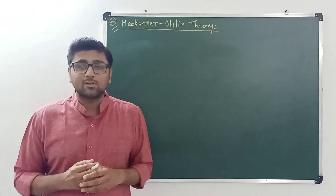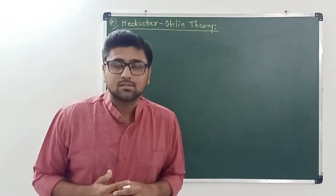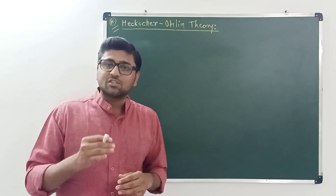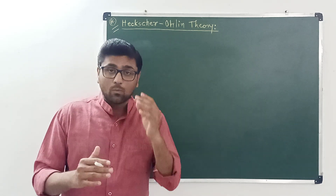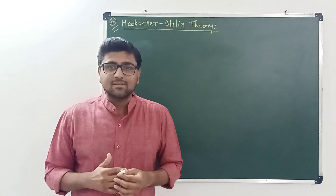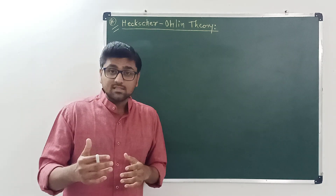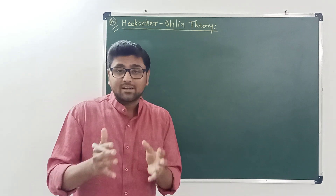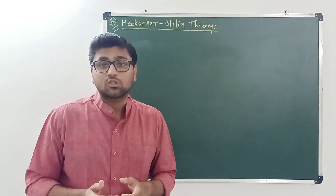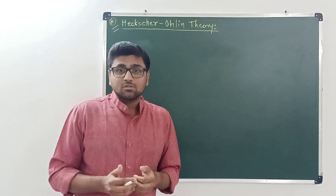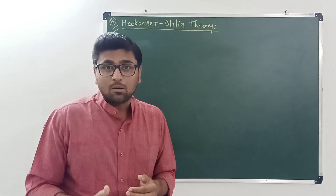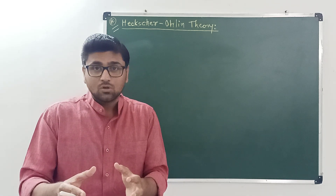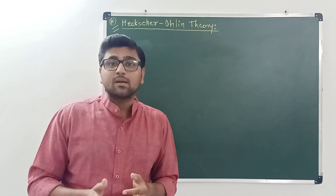I want to discuss the Heckscher-Ohlin theory of international trade in this video. Before we understand this theory, we first need to understand the idea of comparative cost advantage. The comparative cost advantage theory was developed by David Ricardo. It says that one nation has an absolute advantage in production of both commodities, but has a comparative advantage in production of one commodity. Ricardo explains that a nation exports the commodity in which it has a comparative advantage, but he does not explain why there is a comparative cost difference.